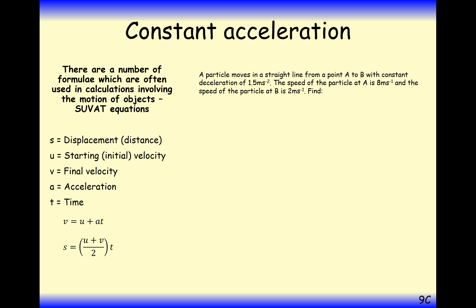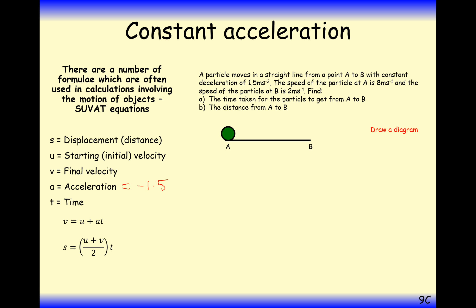Let's look at another question. A particle moves in a straight line from point A to B and decelerates at 1.5 metres per second squared. Because it's decelerating, we're going to set acceleration equal to minus 1.5. The speed of the particle at A is 8 and the speed at B is 2. Find the time taken and the distance travelled. Draw yourself a diagram: 8 to start with, 2 to finish, and write out S, U, V, A, and T.